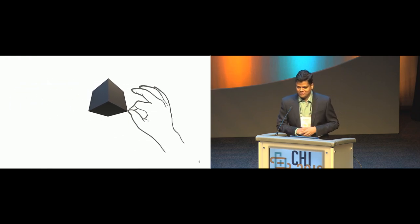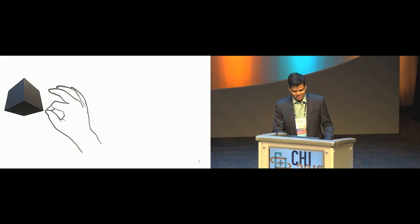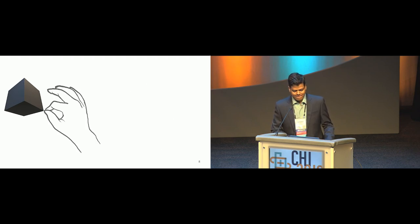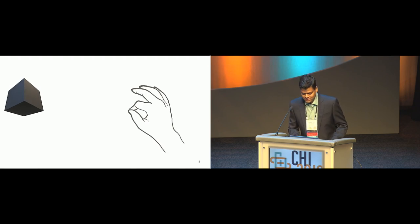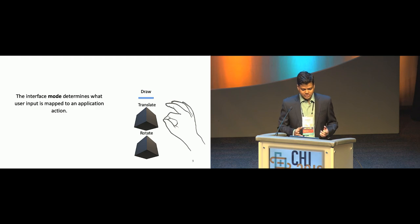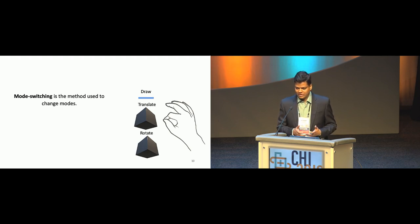Now the last option - you won't get more chances beyond this. It should be the easier one. What do you think this hand motion did now? It rotated the cube. So the interface mode determines what user input is mapped to an application action, and mode switching is simply a transition from one mode to the other.